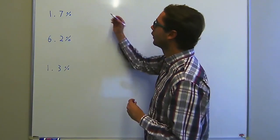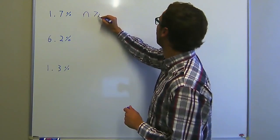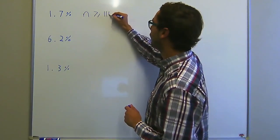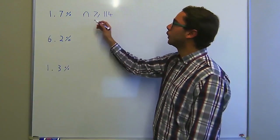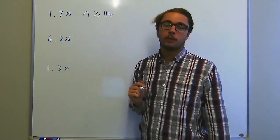So now we've worked out that N for 1.7% should be bigger than or equal to 114. Take note that it's not equal to 114. What we're working out is the minimum sample size. So it's greater than or equal to 114.